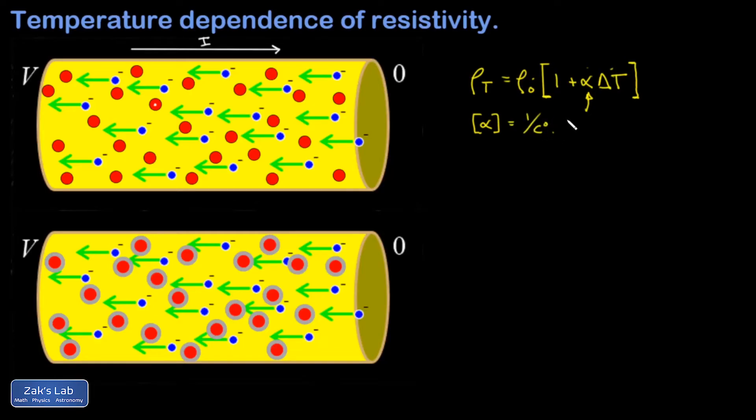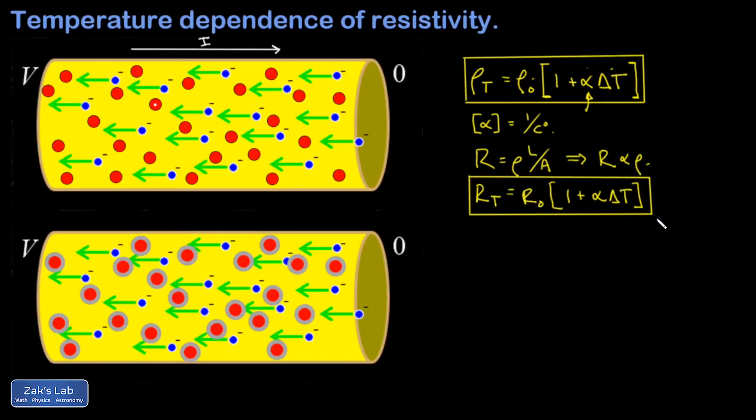We originally introduced resistivity in a video about how resistance depends on the length and cross-sectional area of a resistor. In that video, we deduced this formula that resistance is equal to the resistivity times the length over area. The main point being that the resistance of a resistor is proportional to the resistivity of the material. Well, if resistance is proportional to the resistivity of the material, then I could write my simple linear model like this.